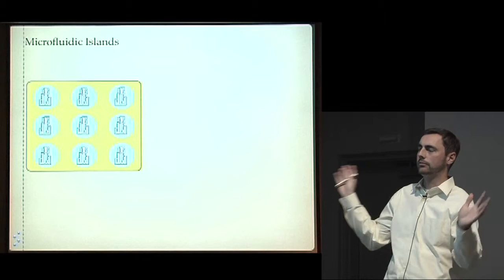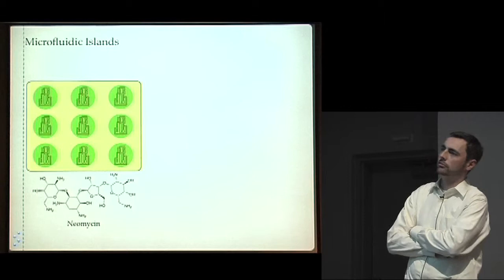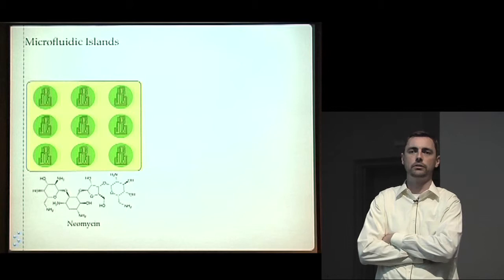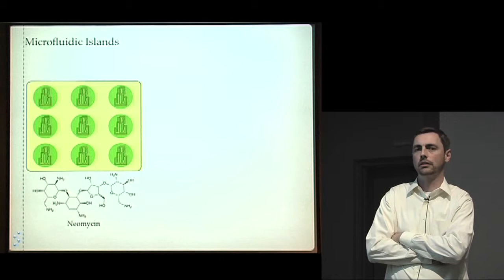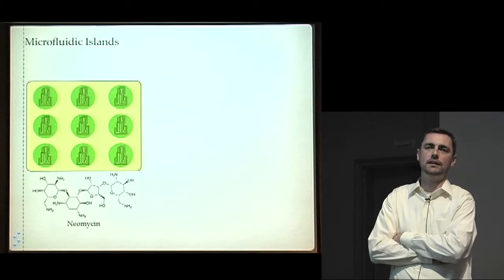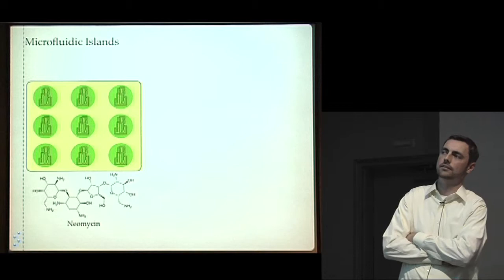And the challenge here was this molecule called neomycin, which is the kryptonite of this particular molecule. So neomycin is a class of molecules, belongs to a class of molecules called aminoglycosides, which bind to RNA molecules. And as antimicrobials inhibit a variety of RNA-catalyzed reactions, including the reaction that puts together amino acids into proteins.